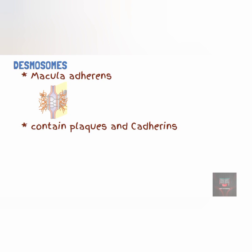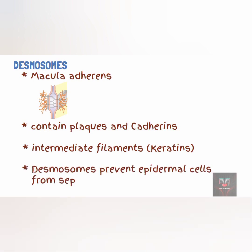Desmosomes, also called macular adherens, also contain plaque proteins and transmembrane glycoproteins called cadherins, which attach to intermediate filament keratins inside the cell. However, unlike zonula adherens, desmosomes do not form a tight belt around the cells; hence they are referred to as macular adherens. Desmosomes also prevent cells from separating when acted upon by force.